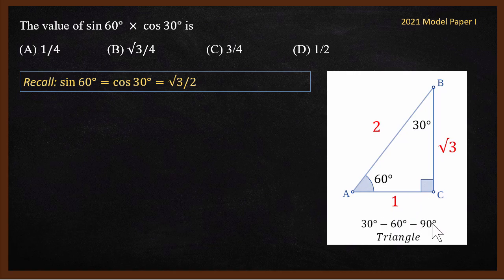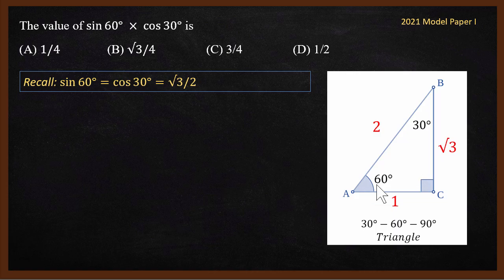I always use the 30-60-90 triangle to find the values. In the 30-60-90 triangle, if the side adjacent to 60° is 1 unit, the opposite side is root 3 units, and the hypotenuse is 2. sin 60° equals opposite over hypotenuse, which is root 3 by 2. cos 30° equals adjacent over hypotenuse, which is root 3 by 2.